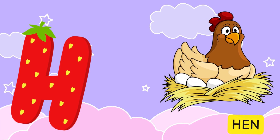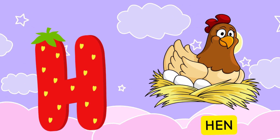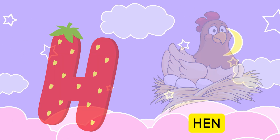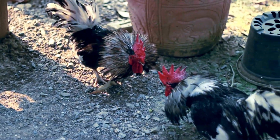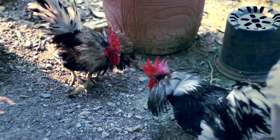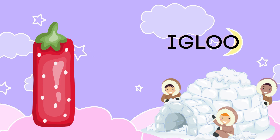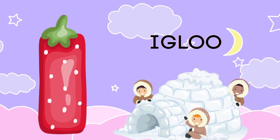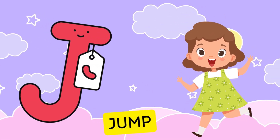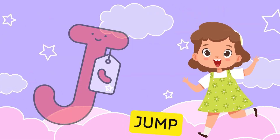H is for hand, a-a-hand. I is for igloo, i-i-igloo. J is for jump, j-j-jump.